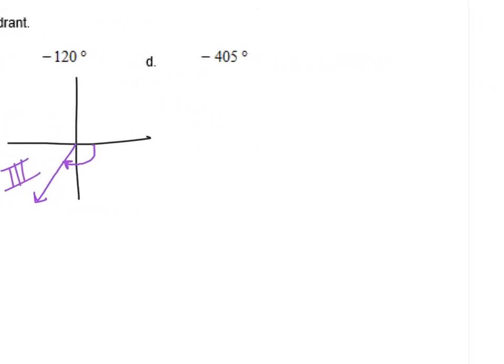And last, but certainly not least, negative 405 degrees. Negative means I'm going to go down. And do you see how it's more than 360? So, I'm going to go all the way around one full rotation. That's a negative 360 degrees. We're at negative 360. How many more do we need to go to get to negative 405? Well, that's another 45 degrees. So, I have to go 45 degrees into this quadrant, which means I'm going to go halfway in.